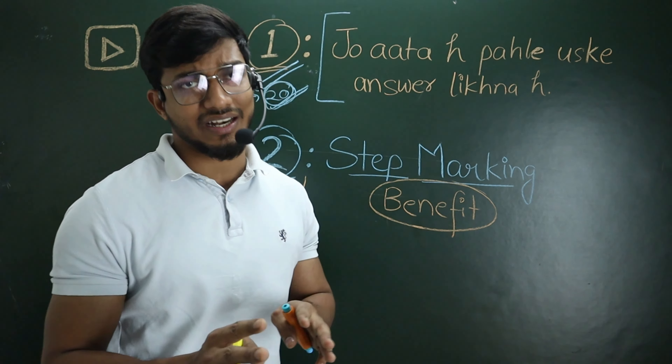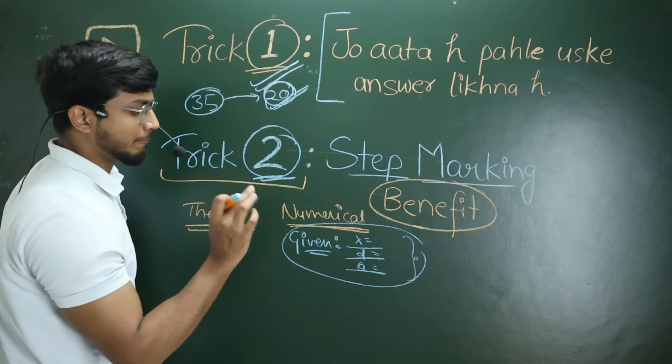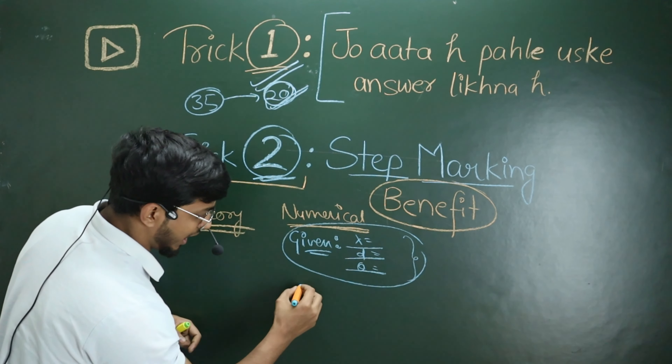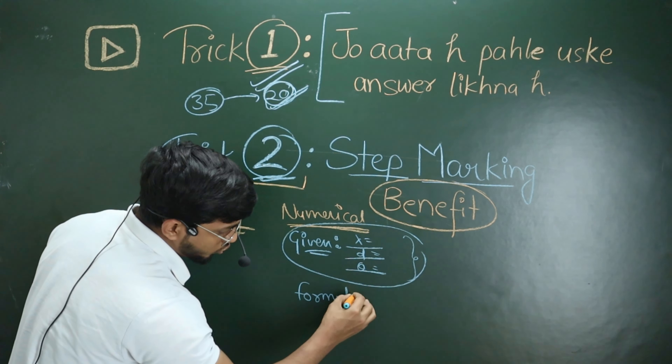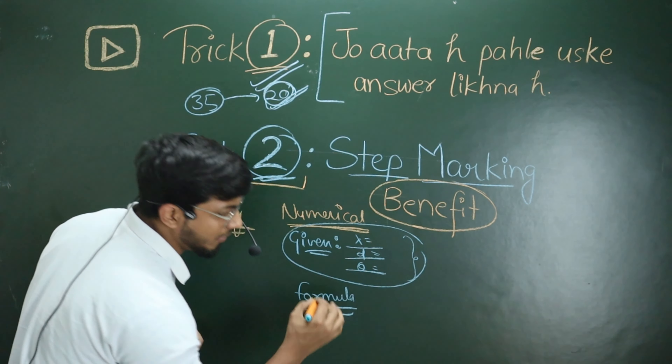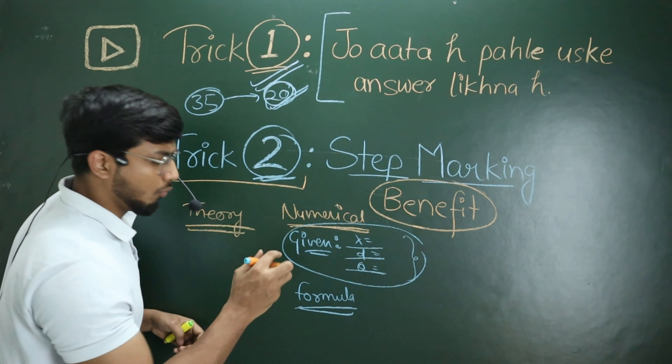First, I will tell you about numerical questions. When nothing comes to you in a numerical question, first read the question quickly, then write it out again. Write down all the given values from the question — the wavelength, the distance, the theta — whatever data is given, write it all down.